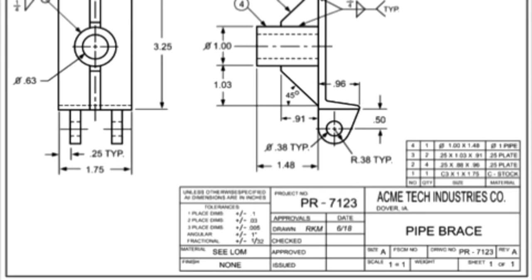Engineering drawings and blueprints are a type of graphical language that communicates ideas and information from the engineer who designed a part to the workers who will make it.